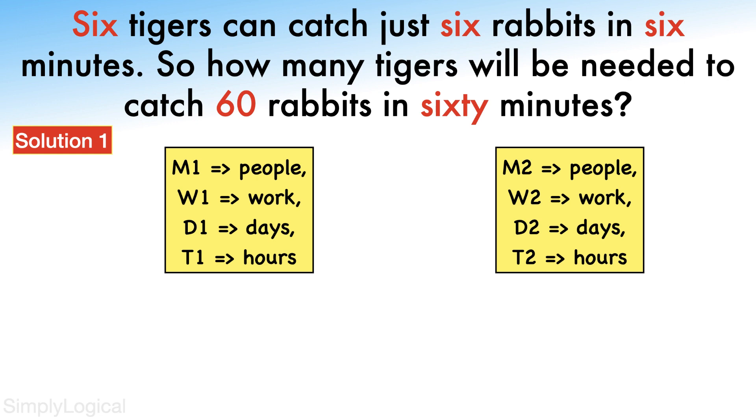then the relation between them will be M1 times D1 times T1 over W1 equals M2 times D2 times T2 over W2.